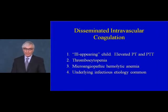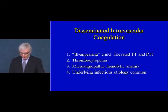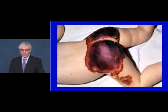Disseminated intravascular coagulation involves generally an ill-appearing child with an elevated prothrombin time and partial thromboplastin time, low platelet count, and a microangiopathic hemolytic anemia in which the red cells are fragmented (called schistocytes or helmet cells). It is often driven by an infectious agent. Children with this condition can have large areas of necrosis and purpura.